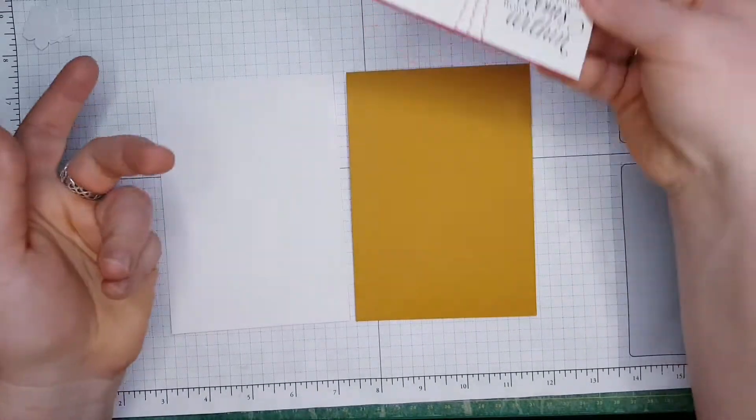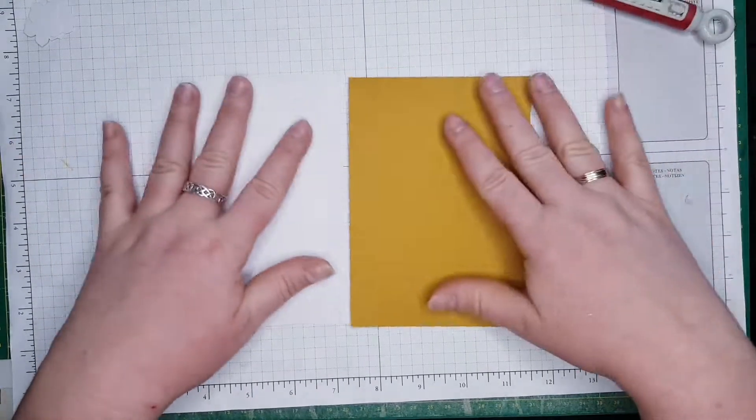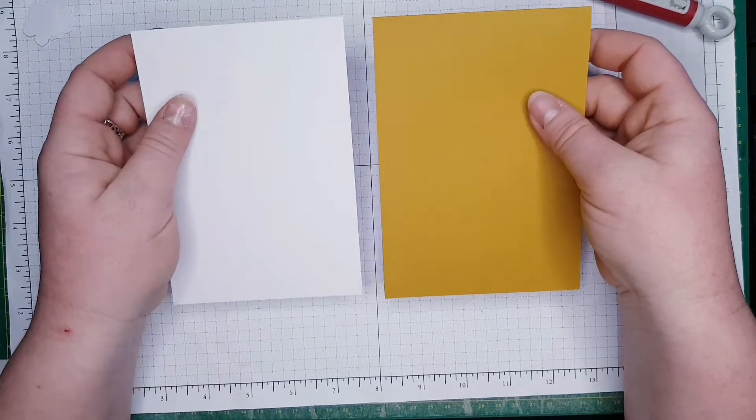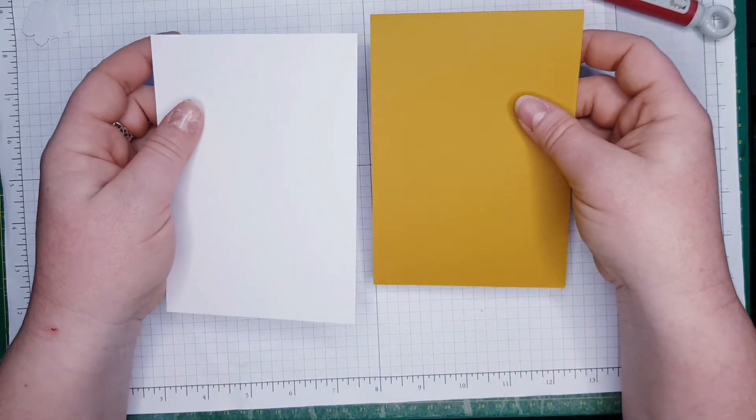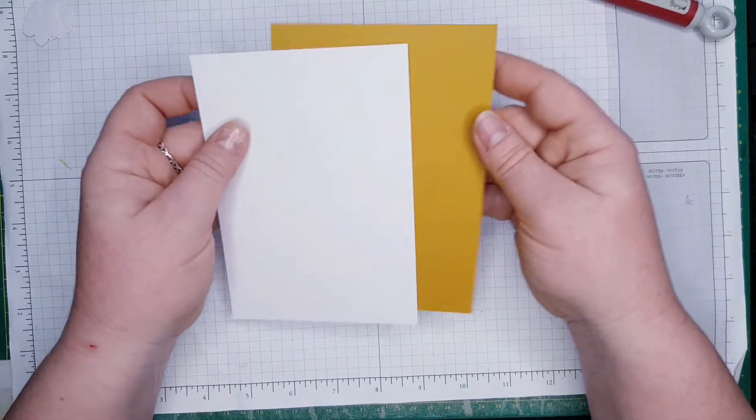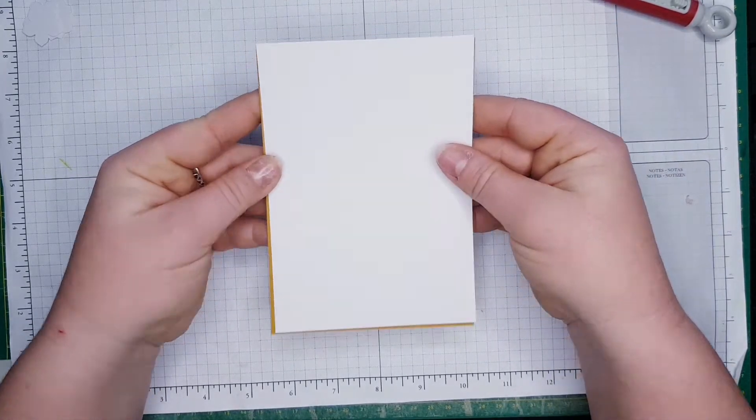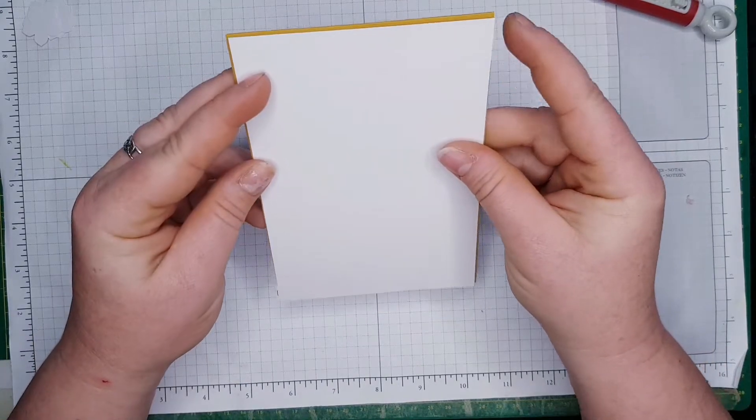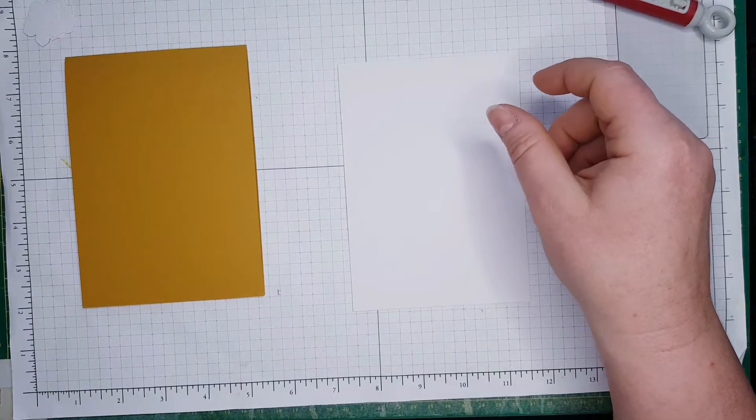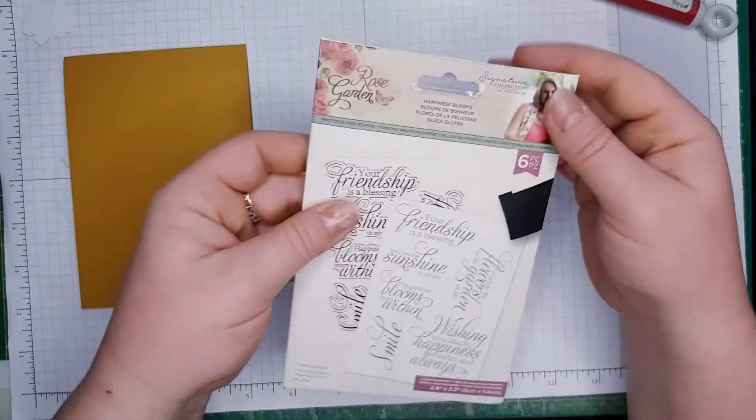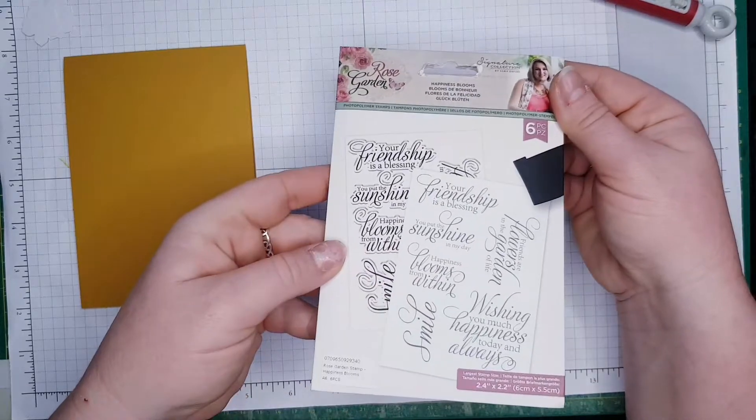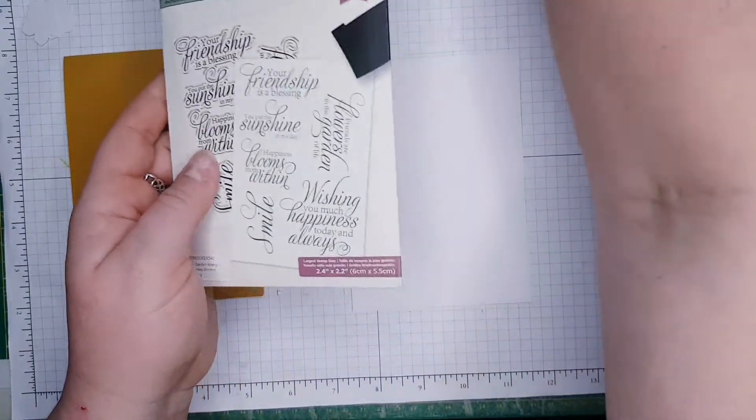Now what we're going to start with, this is Stampin' Up papers, it's standard A2 card, four and one eighth by five and a half. I've cut already the panel which is going to fit this card exactly. We are going to stamp a sentiment from Rose Garden.